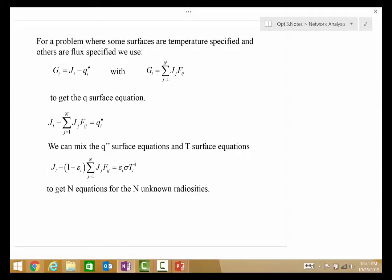Now, there are other problems where, for example, some surface temperatures are specified and others are flux specified. We can mix and match, and it doesn't really matter, which some equations are going to be so-called Q equations and others are going to be T equations. And so, for the Q equations, we're simply using, again, J minus G is equal to Q.